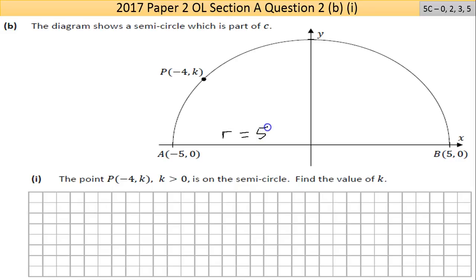So the point P here is minus four something - we don't know what the y-value is. K is greater than zero, has to be because the positive part of the y-axis is on the semicircle. Find the value of K.